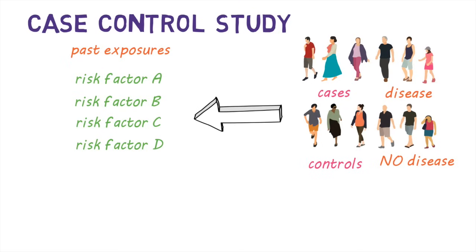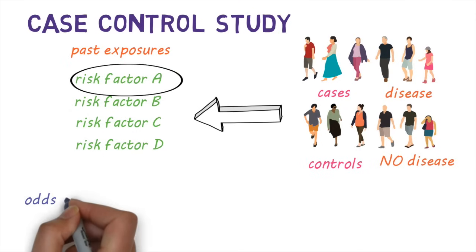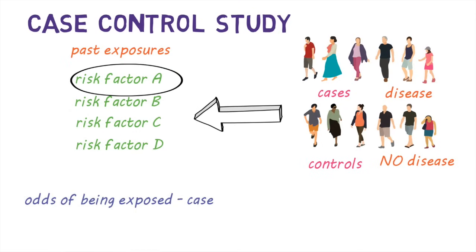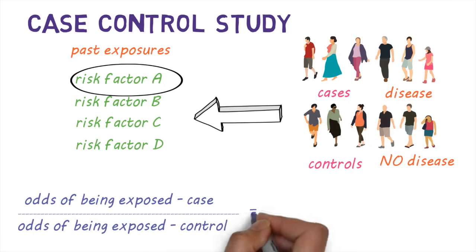Now, for each of the risk factors, the odds of being exposed if they were a case is compared to the odds of being exposed if they were a control. This is called an odds ratio.